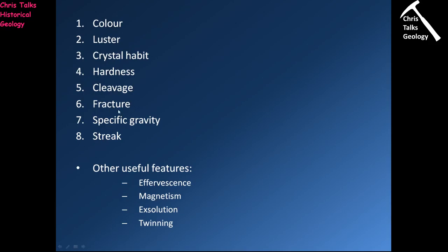Fracture — if a mineral splits not along any plane of weakness, what kind of surface do we get? Specific gravity — how dense is the mineral, how much does it weigh, how does it feel when you pick it up — light or heavy? And streak — if we grind the mineral across a ceramic plate, what colour does it leave behind? There are also four other factors: effervescence (does the mineral react with hydrochloric acid?), magnetism, exolution and twinning — we'll cover those two later.